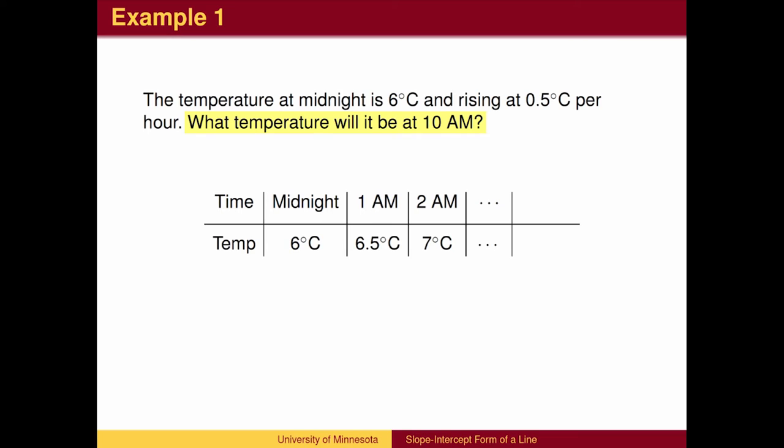Often we are asked to find a future value. We could arrive at the answer by continuing to follow the pattern. By adding one-half of a degree each hour for 10 hours, we find the temperature at 10 a.m. to be 11 degrees.